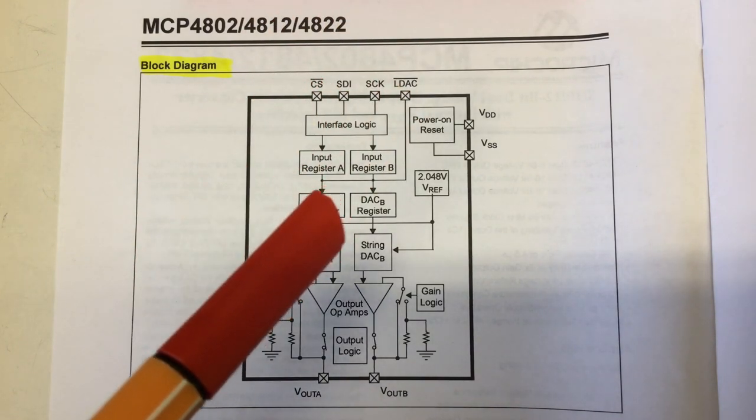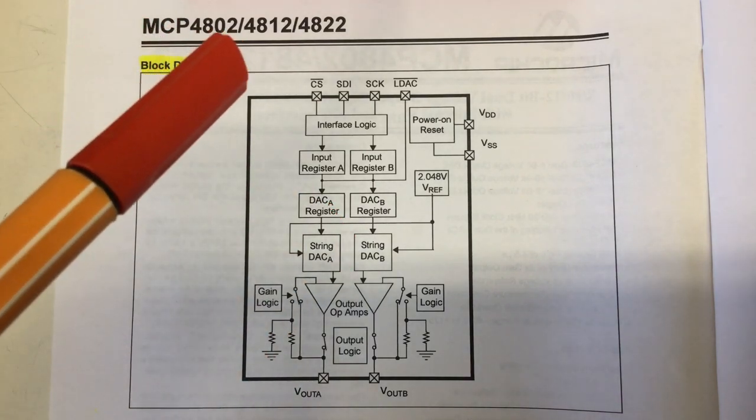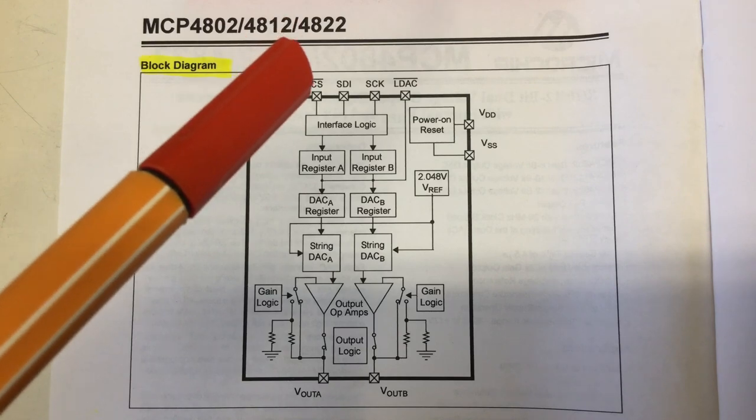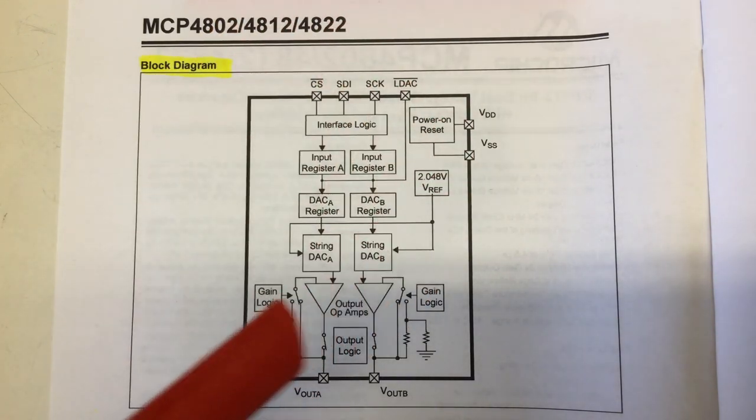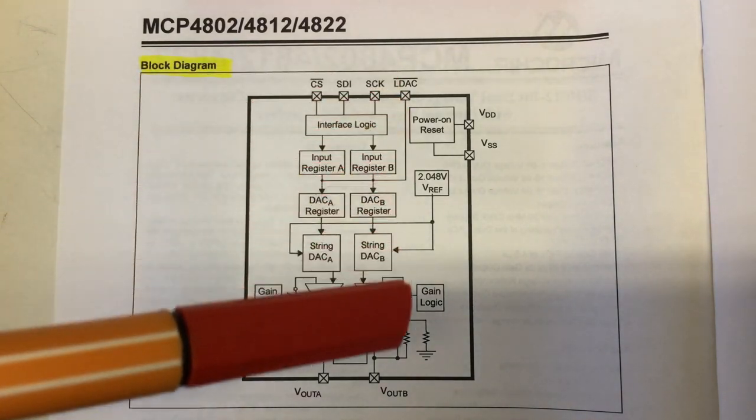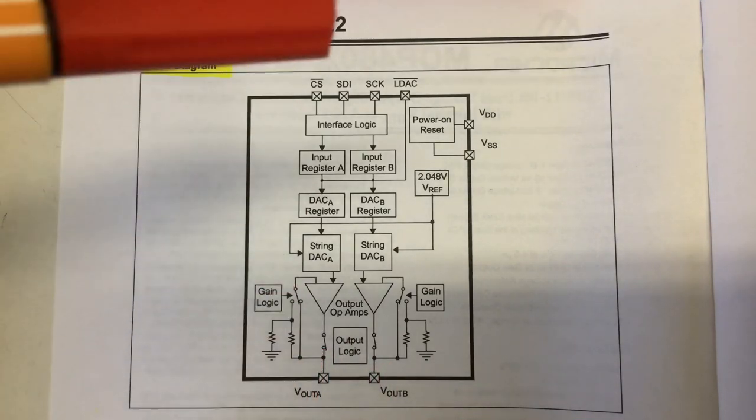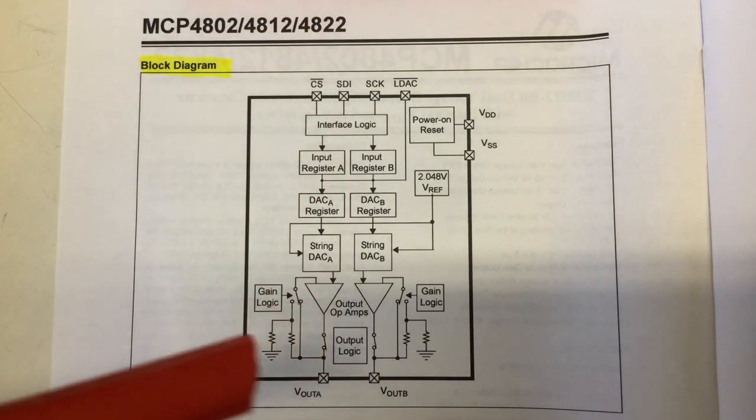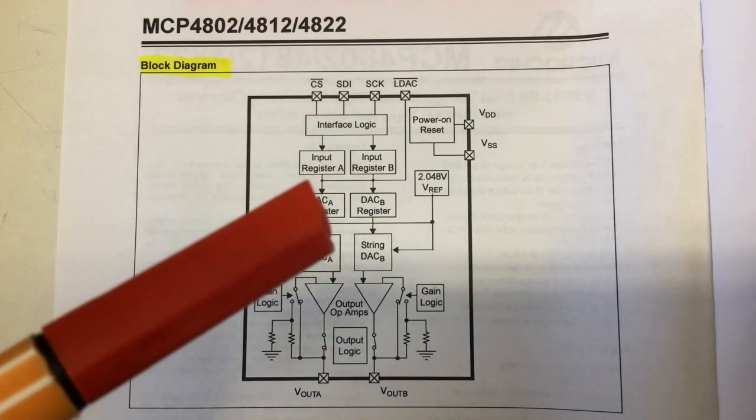Short remark, the MCP4801, 4811, and 4821 are also identical inside, only that the B string of DAC functionality is missing. They only have one string here and one analog output voltage. That's the only difference really.